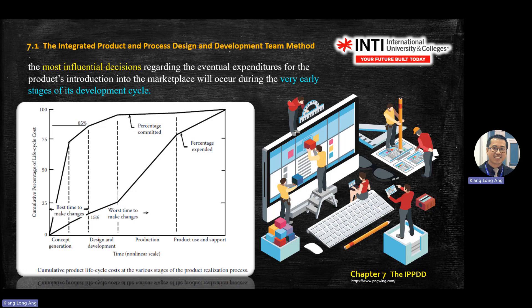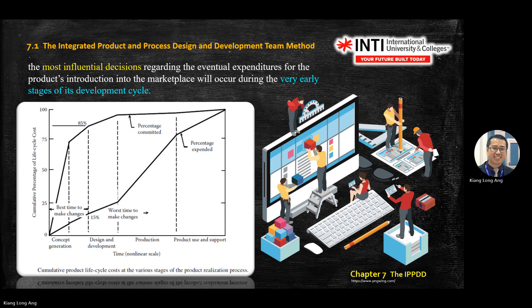There is a life cycle cost chart at various stages of product realization: concept, design, production, and post-production. It shows that if you want to make changes, make them before going into production — ideally during concept time. If you make changes after production starts, you will spend a lot more time and money rectifying issues.